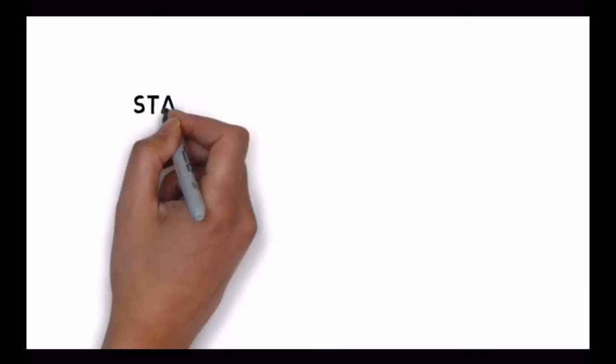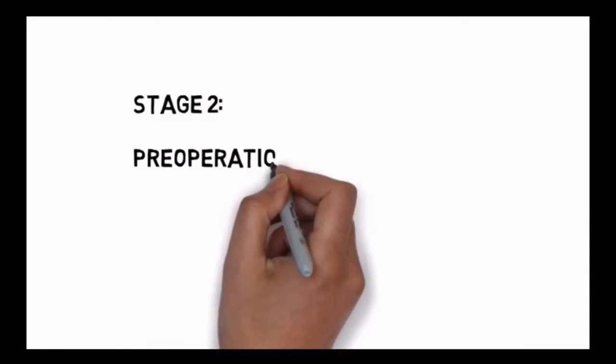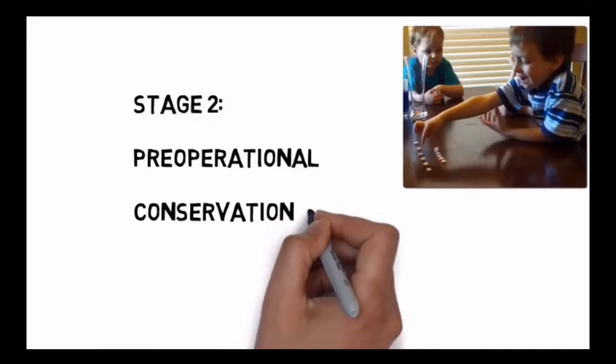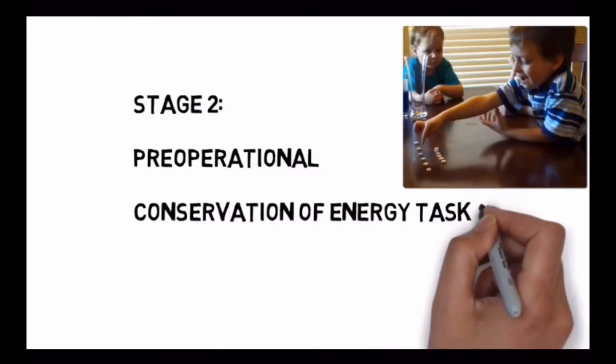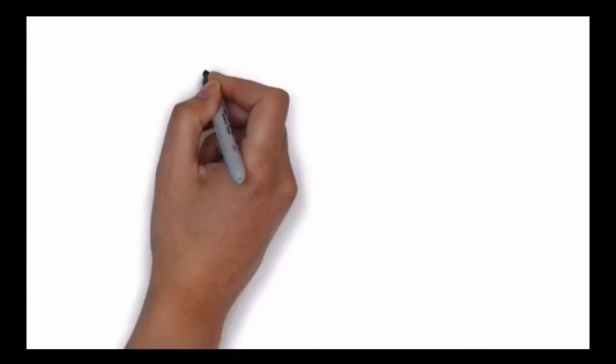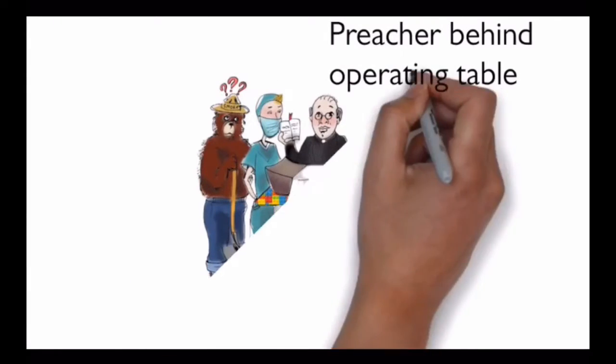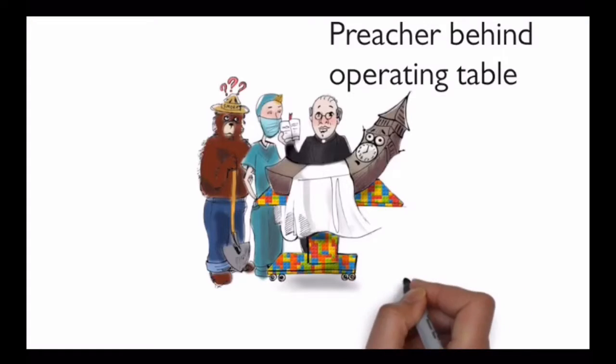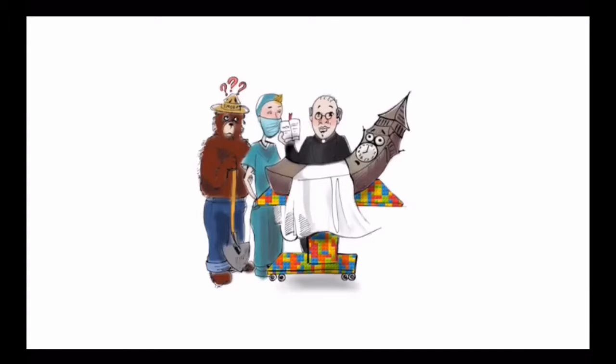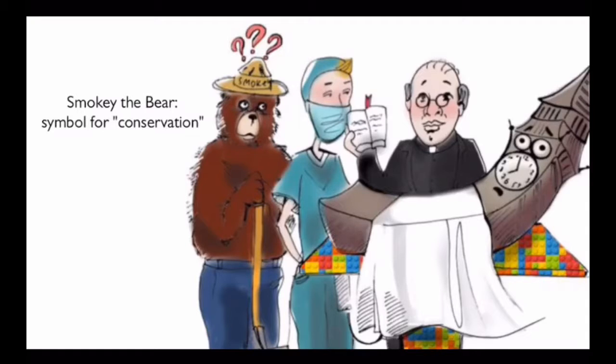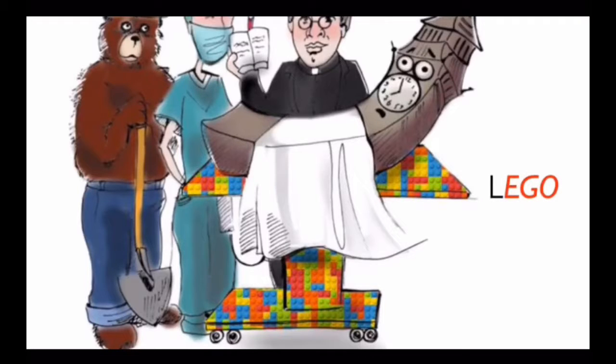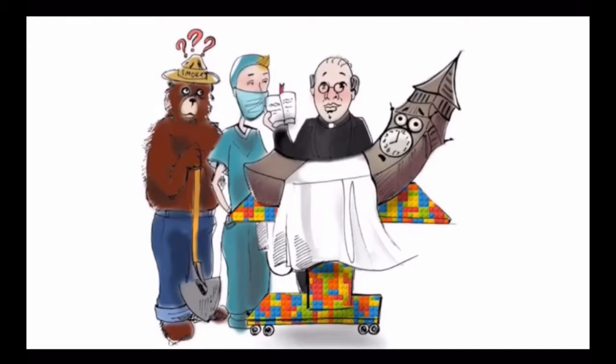The second stage, from ages two to seven, is called pre-operational. And the challenge here is mastering what Piaget called the conservation of energy tasks. Also important, children are very egocentric at this stage. Our keywords? We'll use a preacher standing behind an operating table to remind us of pre-operational. We'll imagine that Smokey the Bear, who stands for conservation, is also behind the table, looking a little uncertain of himself. And finally, that the table is made of Legos, which will remind us of egotistic. We'll place Big Ben on the operating table. Again, you might be thinking that this is an odd way to study, but time and again we find that it simply works.